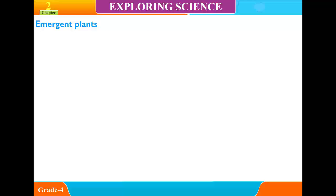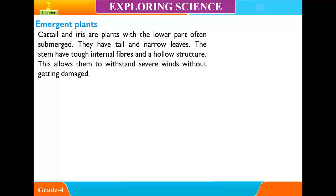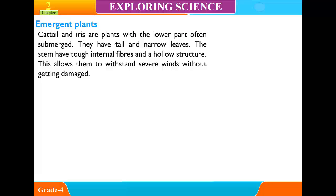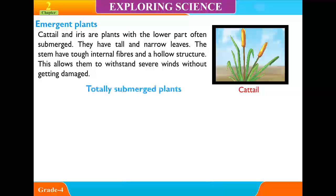These floating plants protect small water animals from the heat of the sun. Emergent Plants. Cattail and iris are plants with their lower parts often submerged. They have tall and narrow limbs. The stems have tough internal fibers and a hollow structure. This allows them to withstand severe winds without getting damaged.